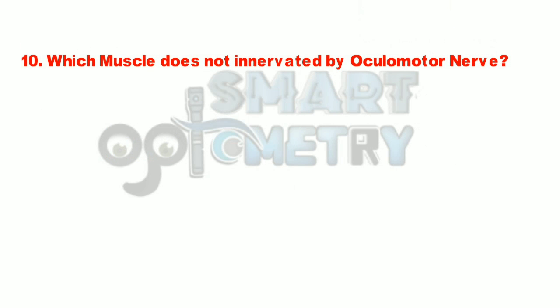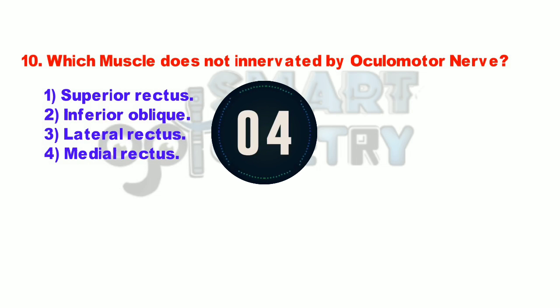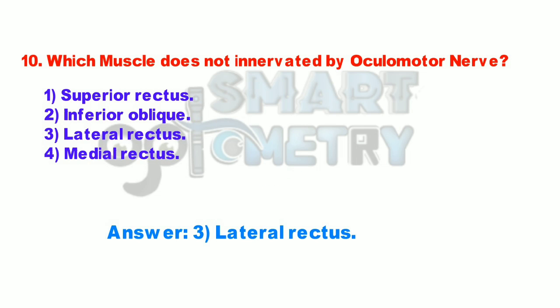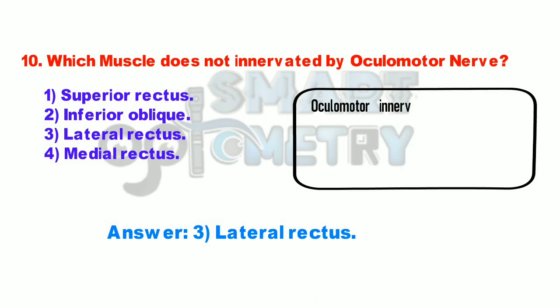Q10. Which muscle is not innervated by the oculomotor nerve? 1. Superior rectus. 2. Inferior oblique. 3. Lateral rectus. 4. Medial rectus. The oculomotor nerve innervates the majority of the extraocular muscles, including the superior rectus, inferior rectus, medial rectus, inferior oblique, and levator palpebrae superioris.